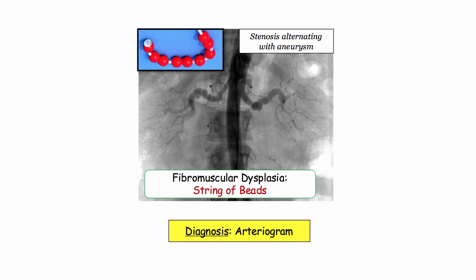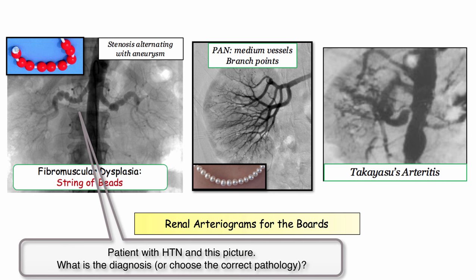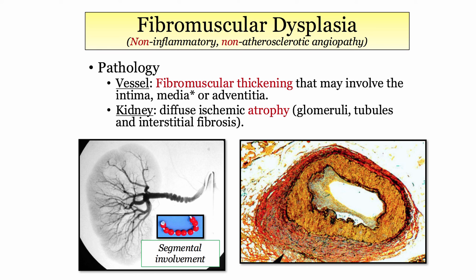Here is another picture of those beaded-appearing blood vessels. Fibromuscular dysplasia is the only one where you might be expected to make a diagnosis on appearance alone. In PAN or Takayasu, the vignettes will be replete with other descriptors or pathology to get you across the finish line. Fibromuscular dysplasia can be as simple as a young patient with refractory hypertension — her angiogram is shown; choose the correct diagnosis. Fibromuscular dysplasia is characterized by fibromuscular thickening; the thickening can involve any layer, but the media is most commonly involved. The renal parenchyma, if biopsied, would show the same nonspecific manifestation of chronic hypoperfusion — atrophy and fibrosis.